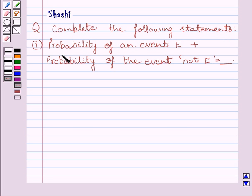First part is, probability of an event E plus probability of the event not E is equal to dash.